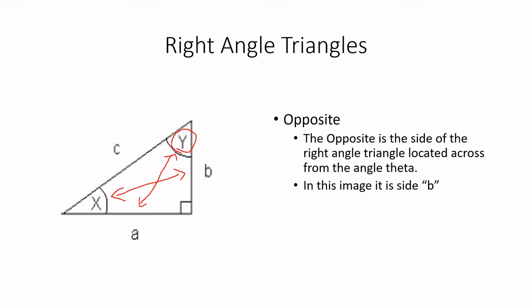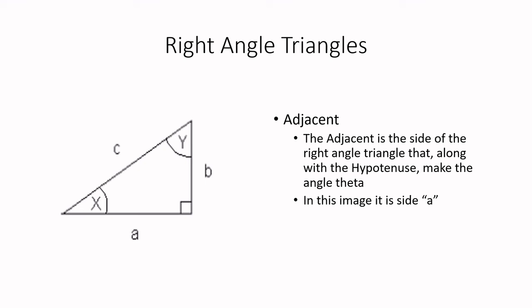And so finally, the third side, we've talked about the hypotenuse. We've talked about the opposite. The third side of our triangle, we call the adjacent. Now, the adjacent carries a very important role, has a very important role. Along with the hypotenuse, it creates our angle theta. So here's our angle theta, which is x. And x is created by side c, which is the hypotenuse, and side a, which is the adjacent.